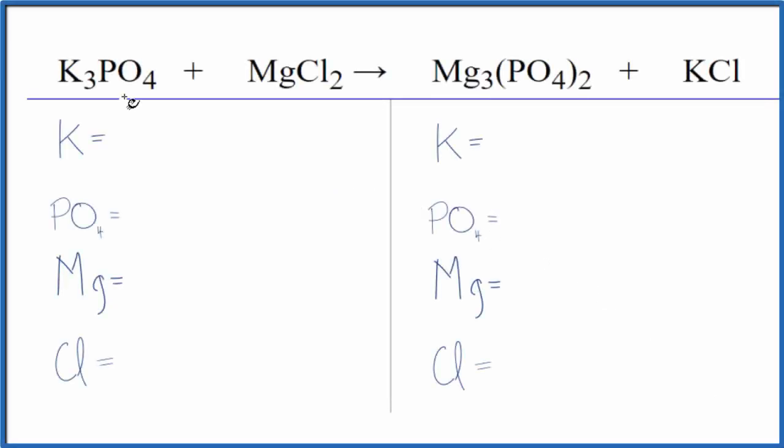In this video, we'll balance the equation for potassium phosphate plus magnesium chloride. That's K3PO4 plus MgCl2.